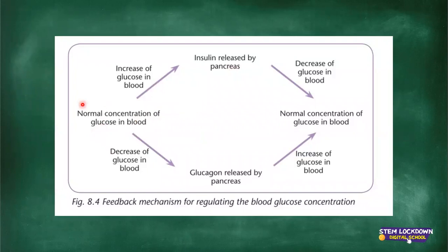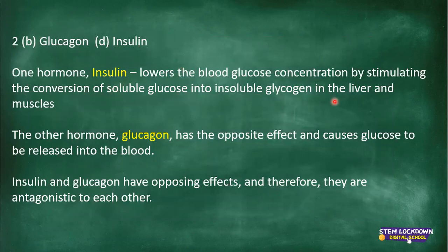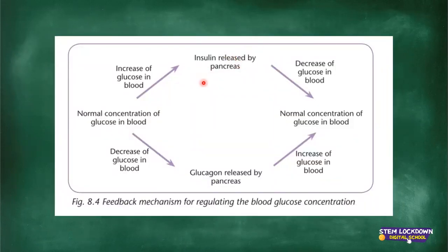This diagram shows what happens. If there's an increase of glucose in your blood — maybe because of the food you've eaten — insulin will be released by the pancreas, which is an endocrine gland. Insulin lowers the concentration of glucose in the blood by converting soluble glucose into insoluble glycogen. Then there's a decrease of glucose in the blood, and your glucose concentration will return to normal.